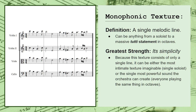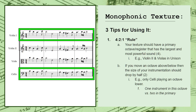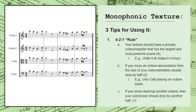In general, this particular texture is a fantastic choice. The most specific strategy is something called the 4-2-1 rule. The concept is pretty simple: regardless of how many instruments are playing your texture, there should be a primary octave or register. This register should have the most powerful sound and the largest instrumentation. If you move an octave above or below this primary register, the size of your instrumentation should drop by half. And if you move an octave further in either direction, the size should drop by another half. This strategy helps ensure that your texture will maintain a clear and balanced sound.